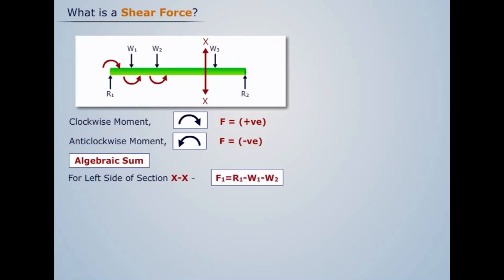Similarly, the algebraic sum of all the vertical forces acting on the right side of the section will be F2 = W3 - R2. Where F1 and F2 are the shear forces.